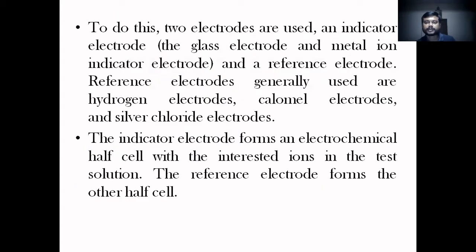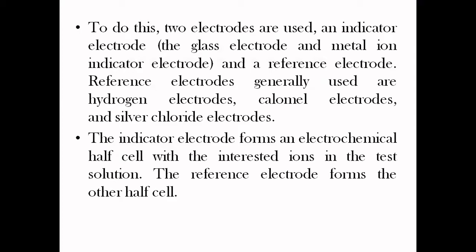In potentiometric titration, we use two types of electrodes to construct an electrochemical cell. One is the indicator electrode, which indicates the presence of the unknown ion — for example, if we want to find the concentration of an acid, we use an indicator electrode whose potential depends on the concentration of H+ ions. The other is the reference electrode; examples include the standard hydrogen electrode, calomel electrode, and silver chloride electrode. The indicator electrode forms one half-cell with the stock ions in the test solution, and the reference electrode forms the other half-cell.